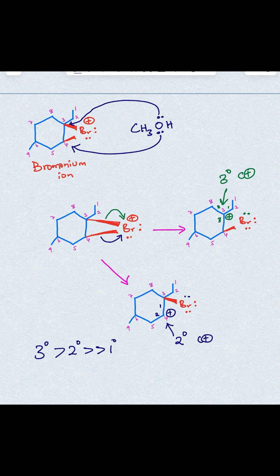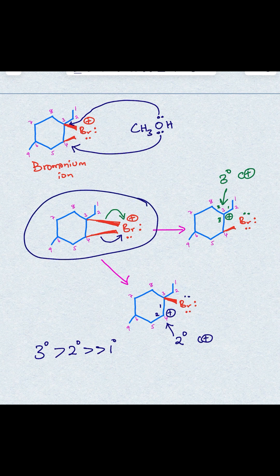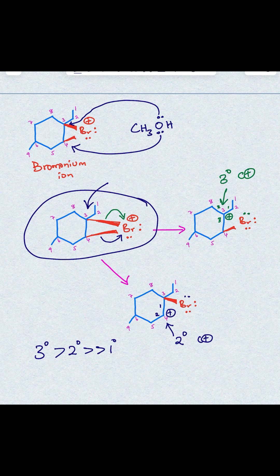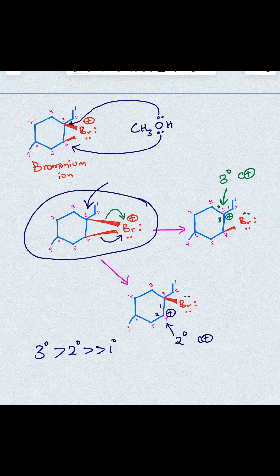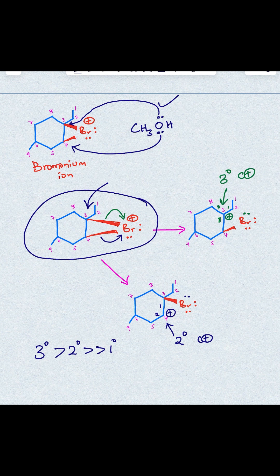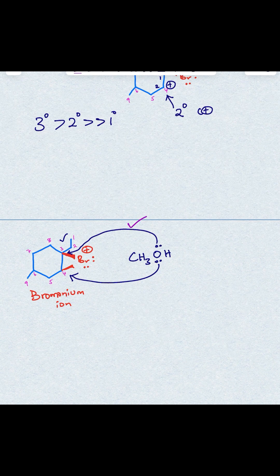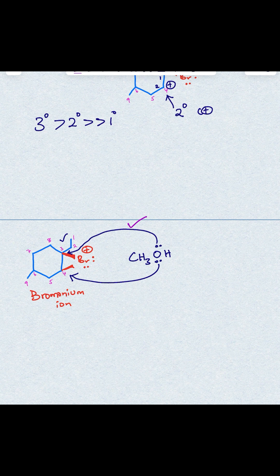So that means that when you look at this carbocation, the tertiary-like carbocation center will be more positive. You'll have a stronger carbocation character, and therefore the nucleophile, which in this case is the alcohol, methanol, will prefer to add to the tertiary position, and therefore this path here is favored, and because of that, now you're going to end up with this product.